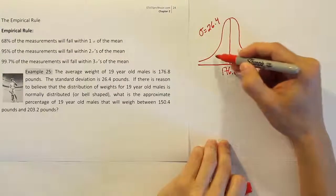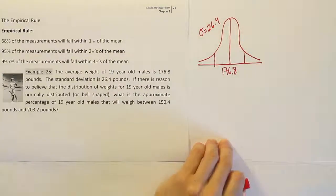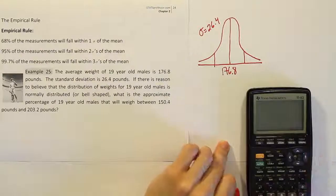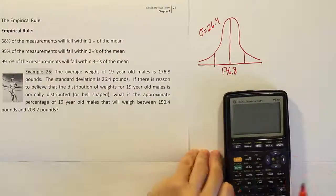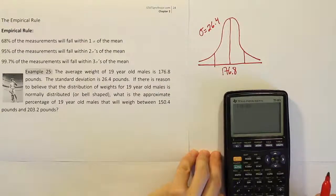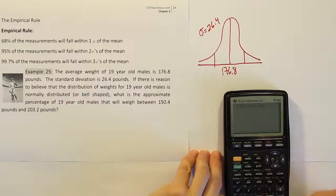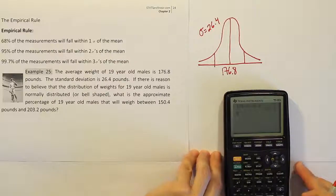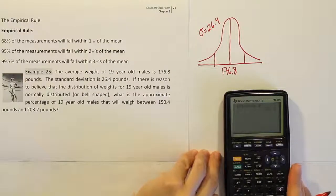So one standard deviation out, let's see what that would be. Well, one standard deviation out means I'm going to take the number that I did in there for my mean, 176.8, and I'm going to add 126.4, right? So I'll add one of those standard deviations. So 126.4 added to 176.8 ends up producing the answer, 203.2.